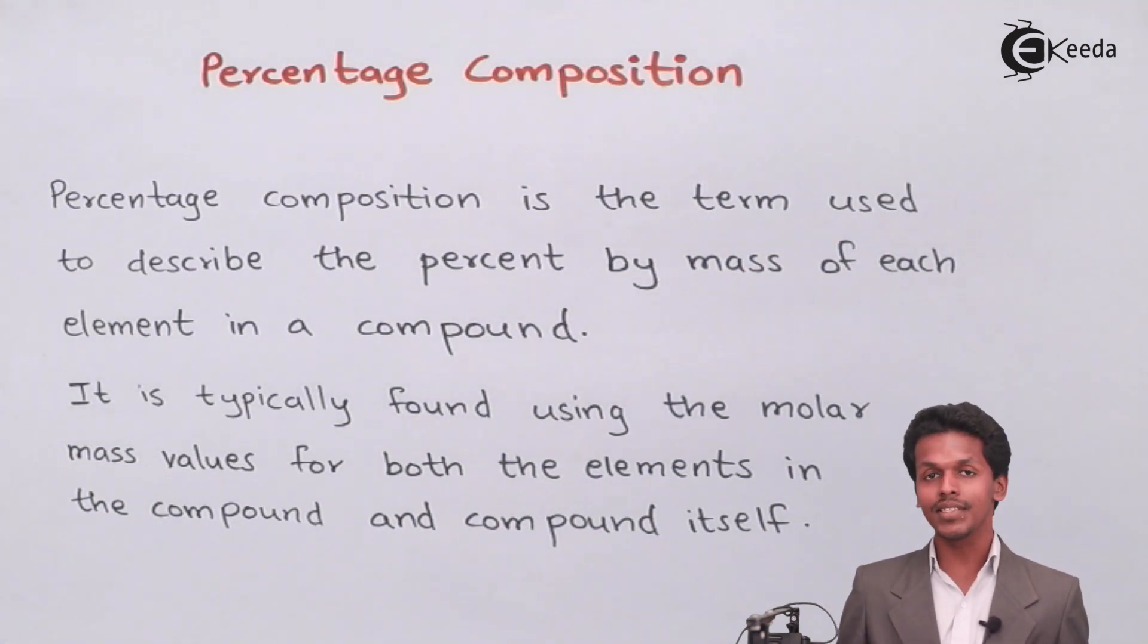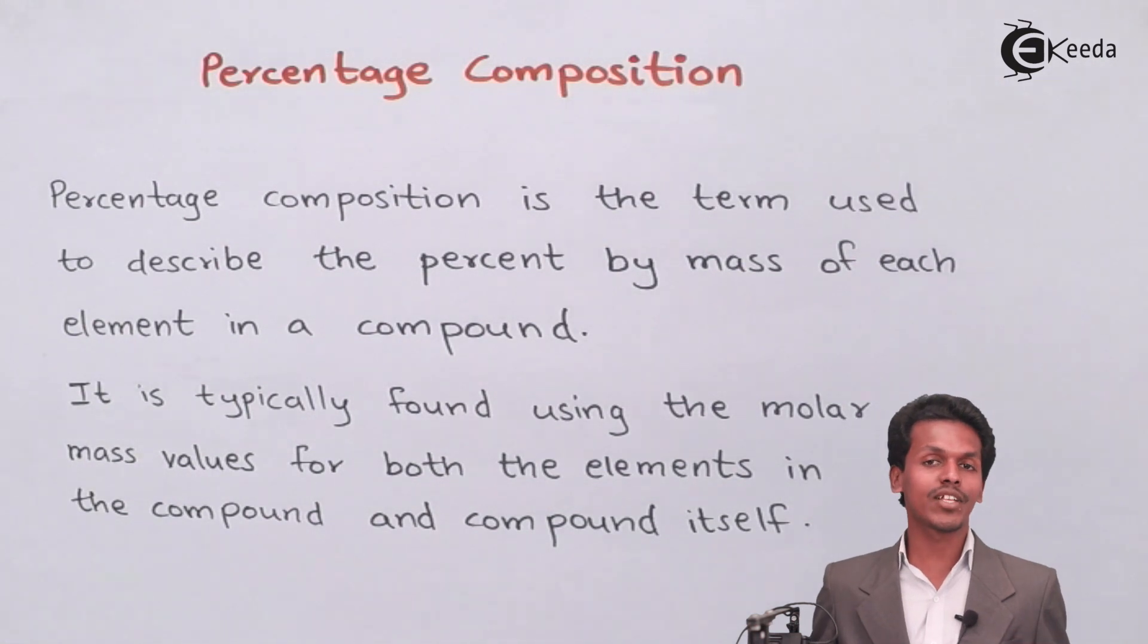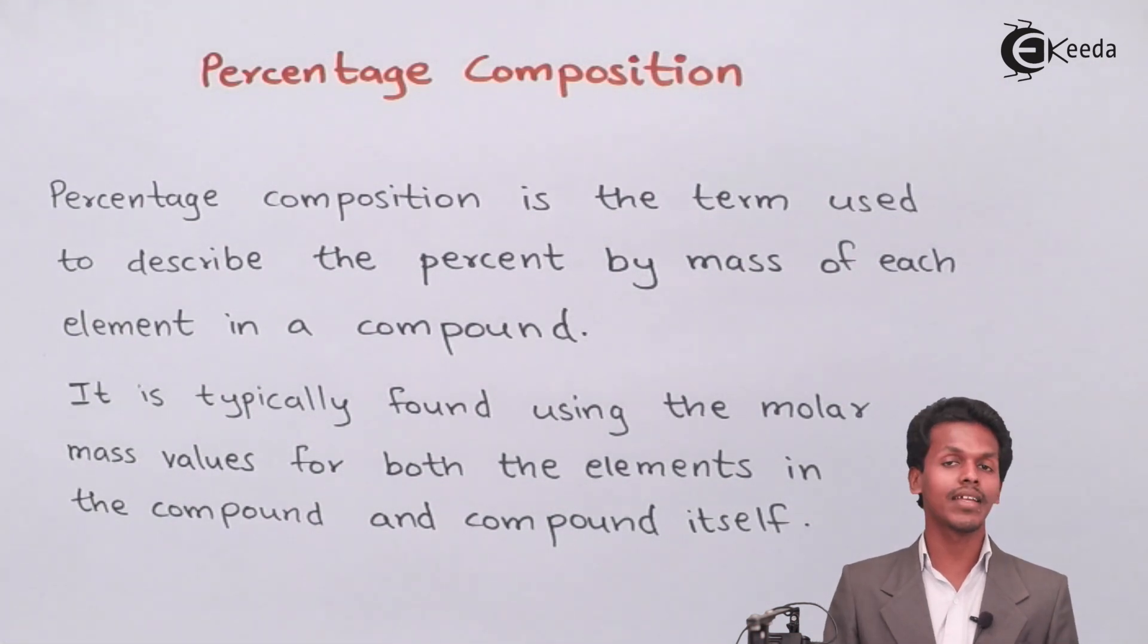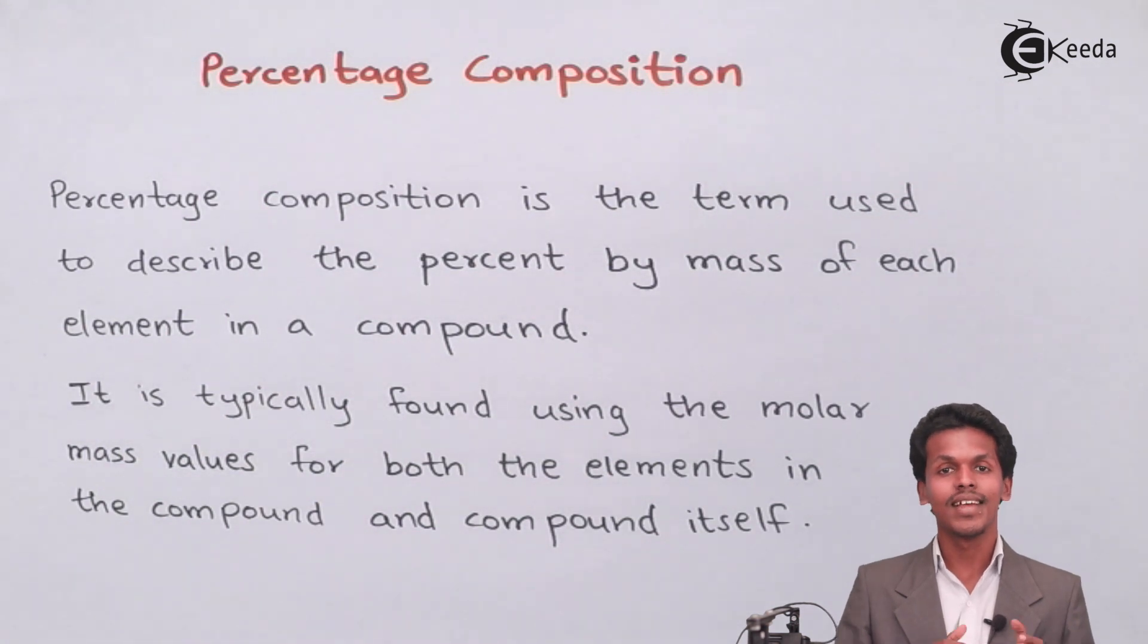Basically, suppose if I am talking about H2O molecules, I know that in H2O I could find two moles of hydrogen. But what is the total mass of the hydrogen in the overall H2O?